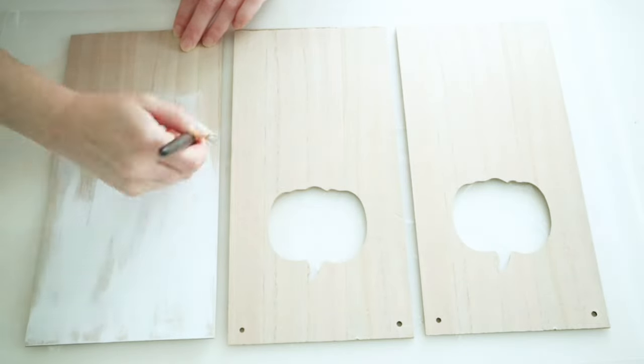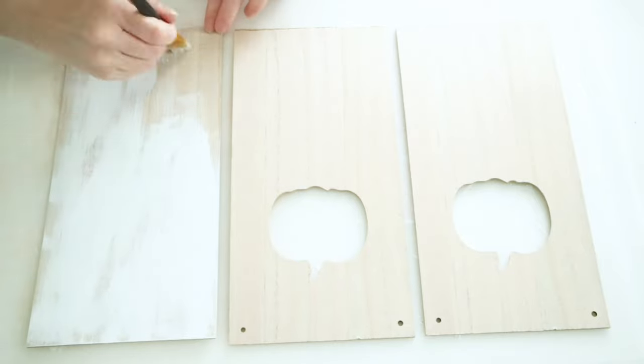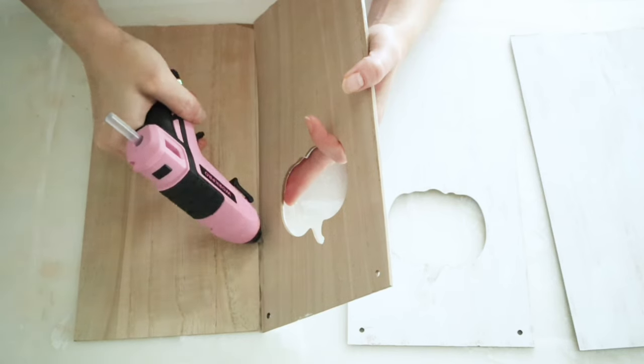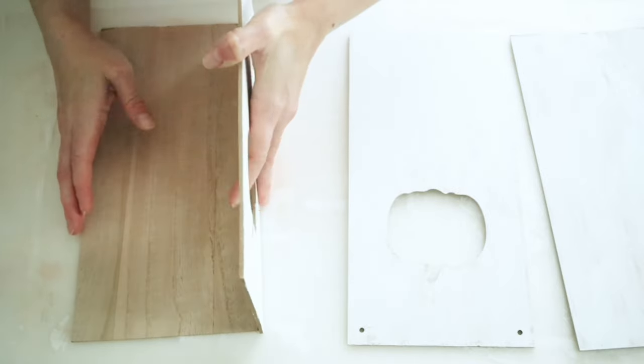Now you can choose to paint or stain these any color you want. Once they were dry, I'm just going to use some hot glue and start putting this together. If you haven't guessed, we are making a lantern slash vase.